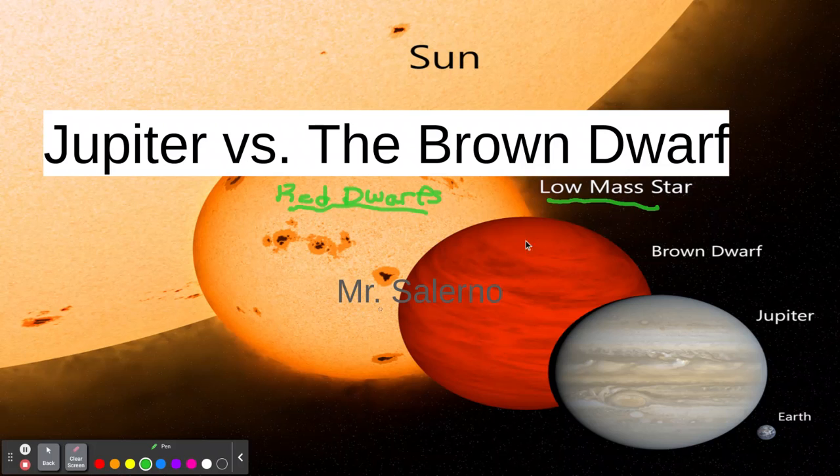So between a low-mass star, which are red dwarfs, and we'll just name it, we'll name it Proxima Centauri, because Proxima Centauri is our closest star. Here's Proxima Centauri. It's some 4.2 light years away. All right, so that's Proxima Centauri.